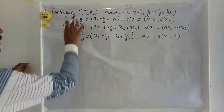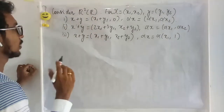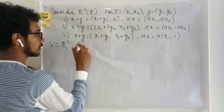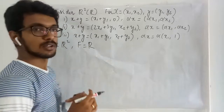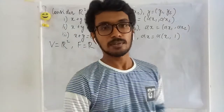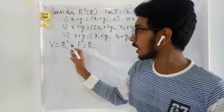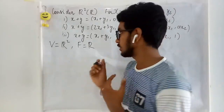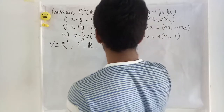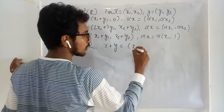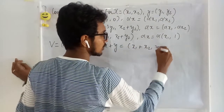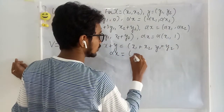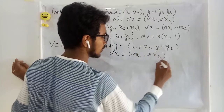Here we are going to consider R² over R, which means the set taken is R² and the field is the reals. Whenever we are given V equal to R² and F equal to R, we think in the usual way: elements X and Y are added in the usual form, and scalar multiplication is defined in the usual way.